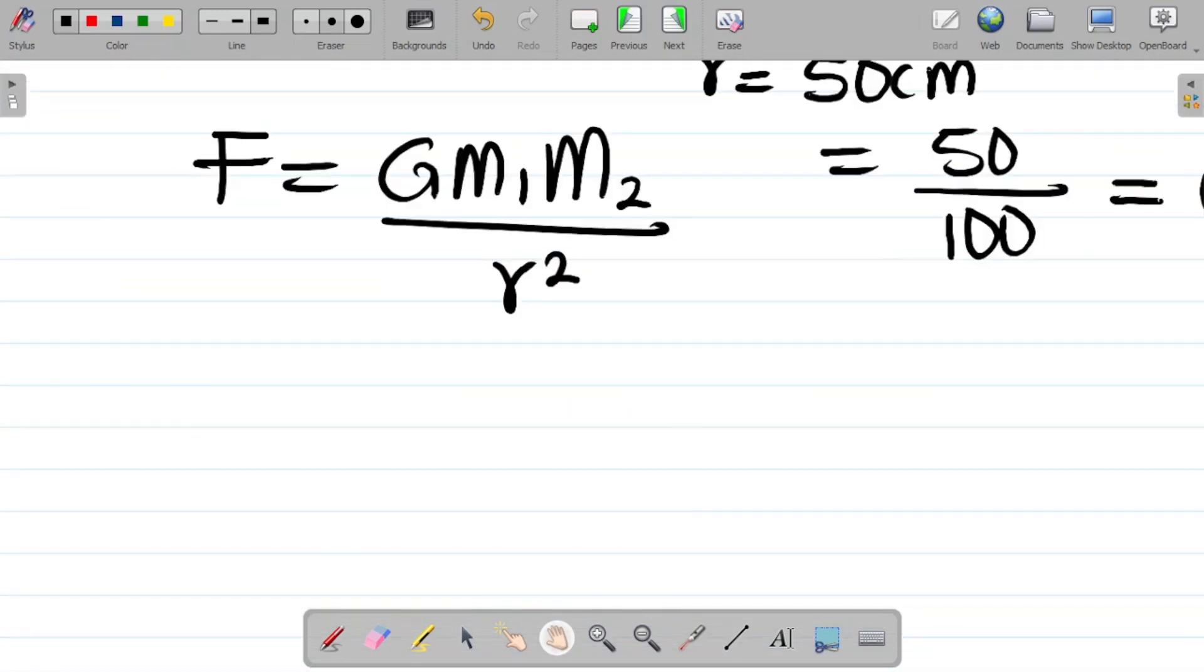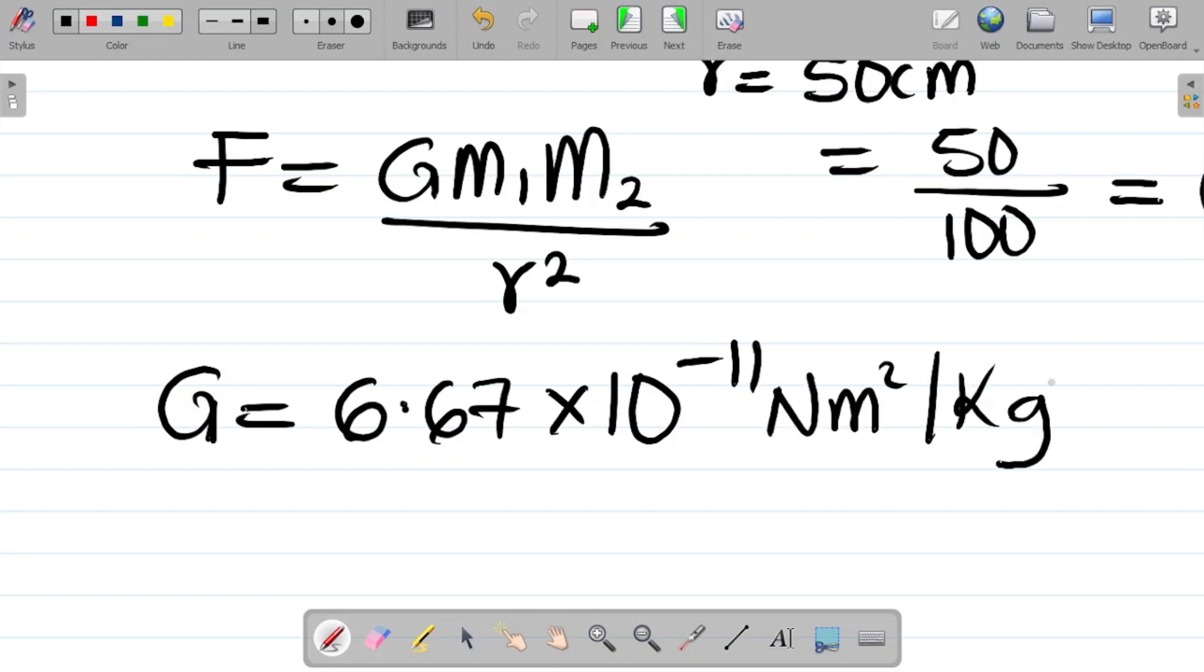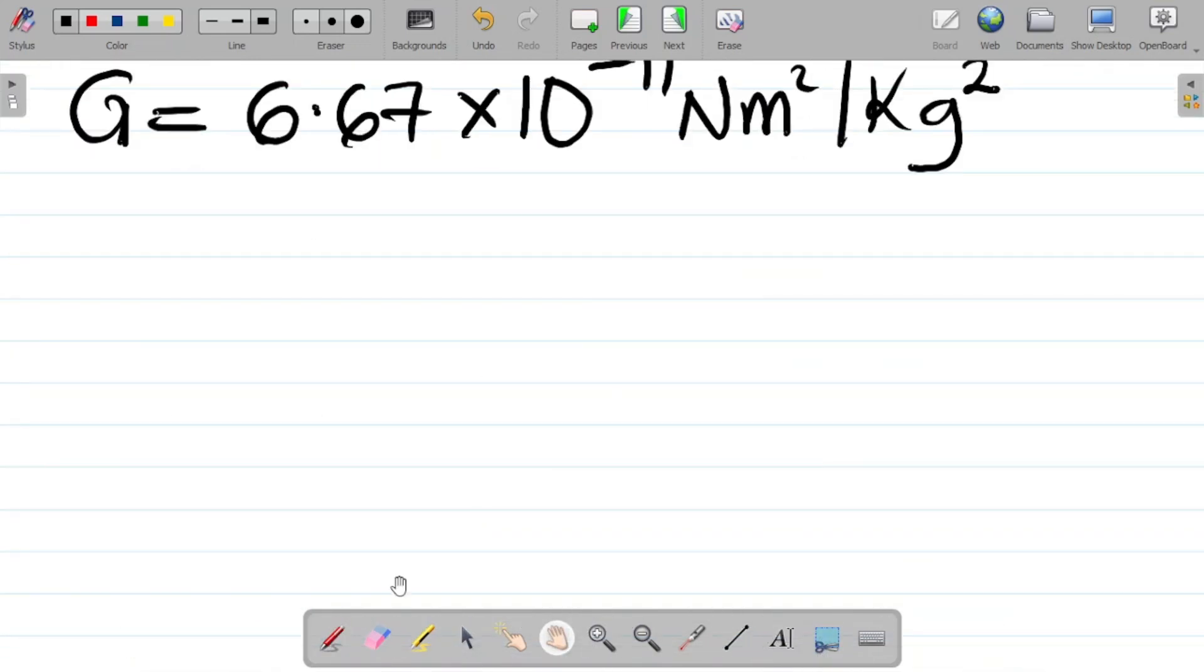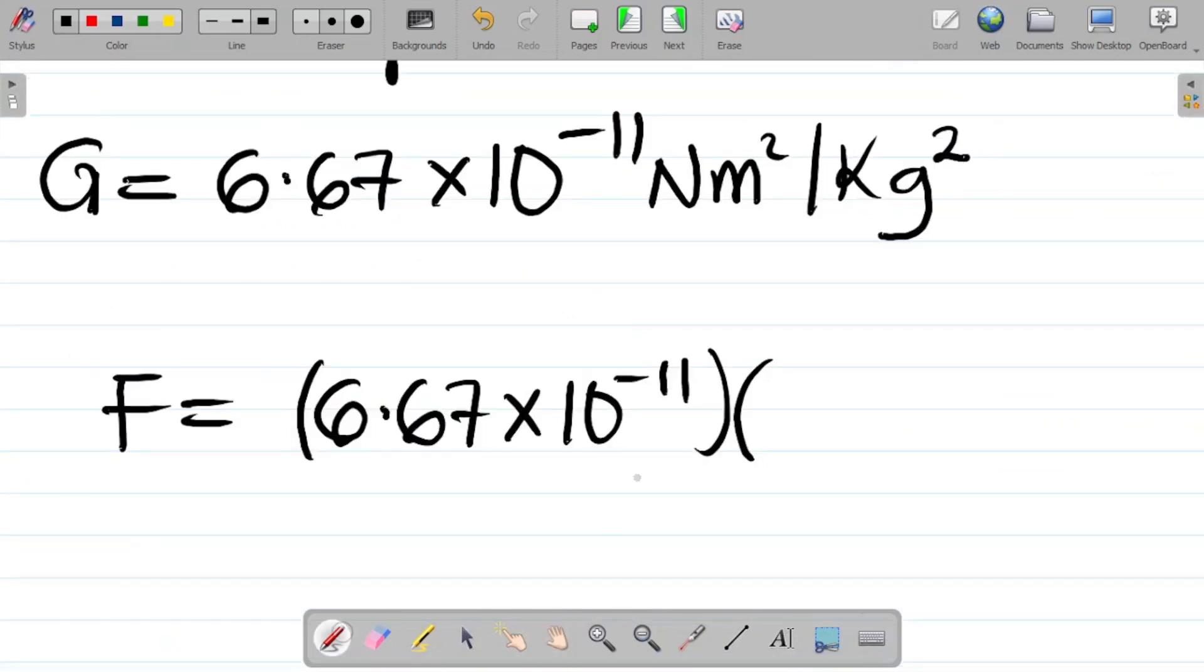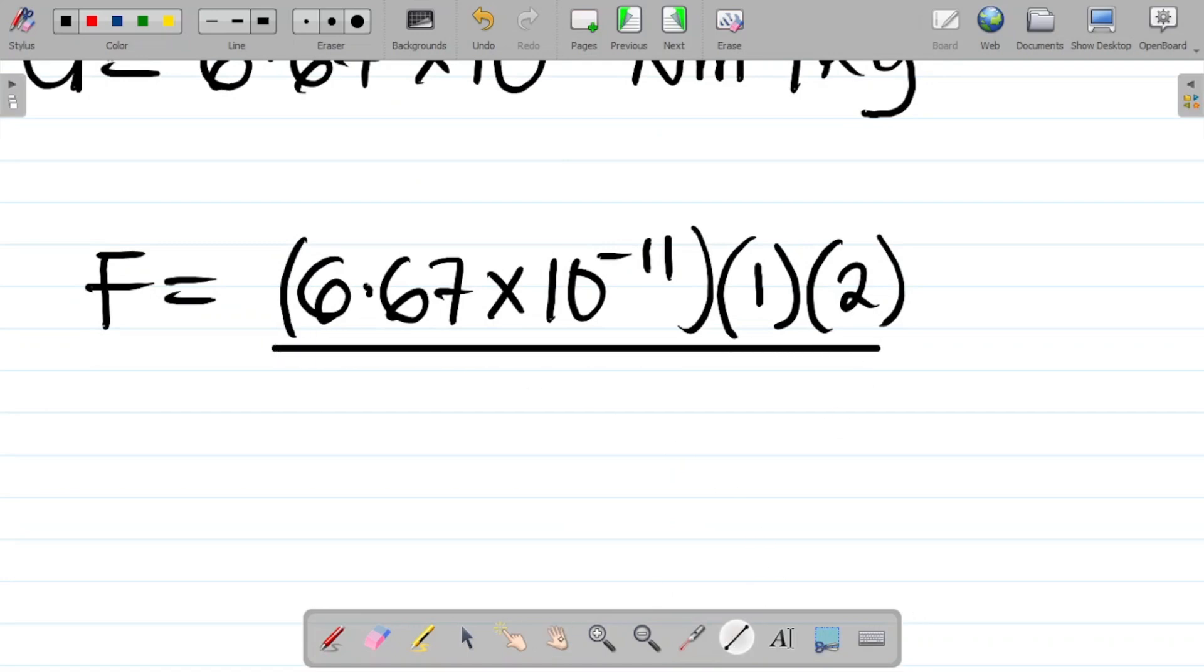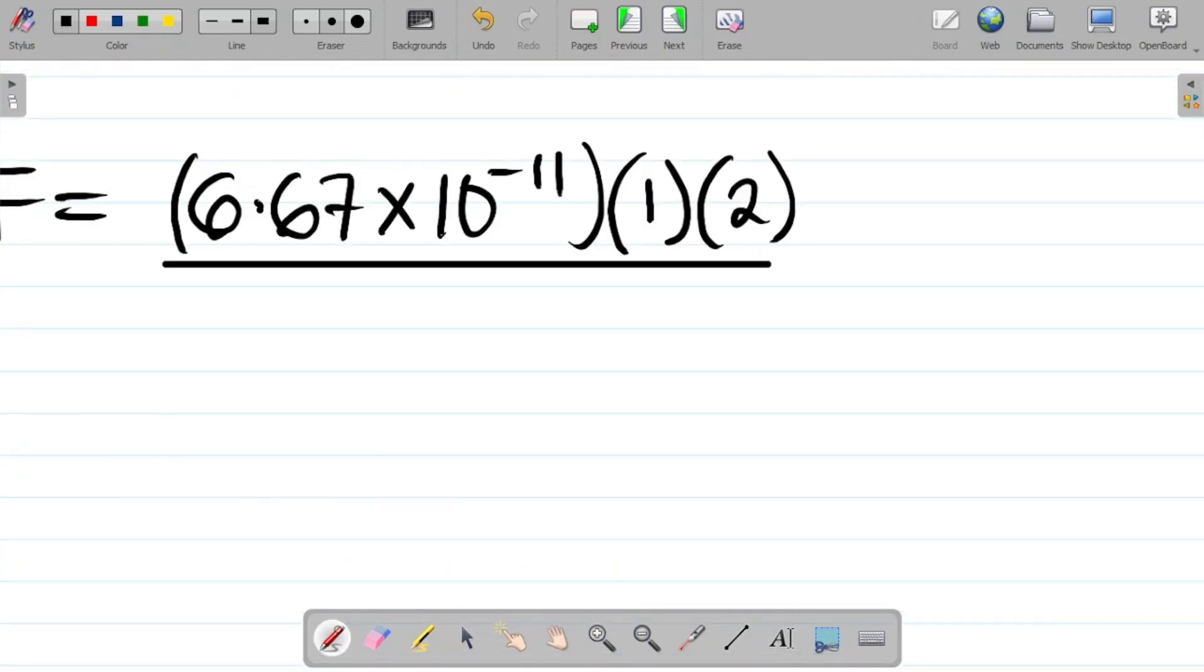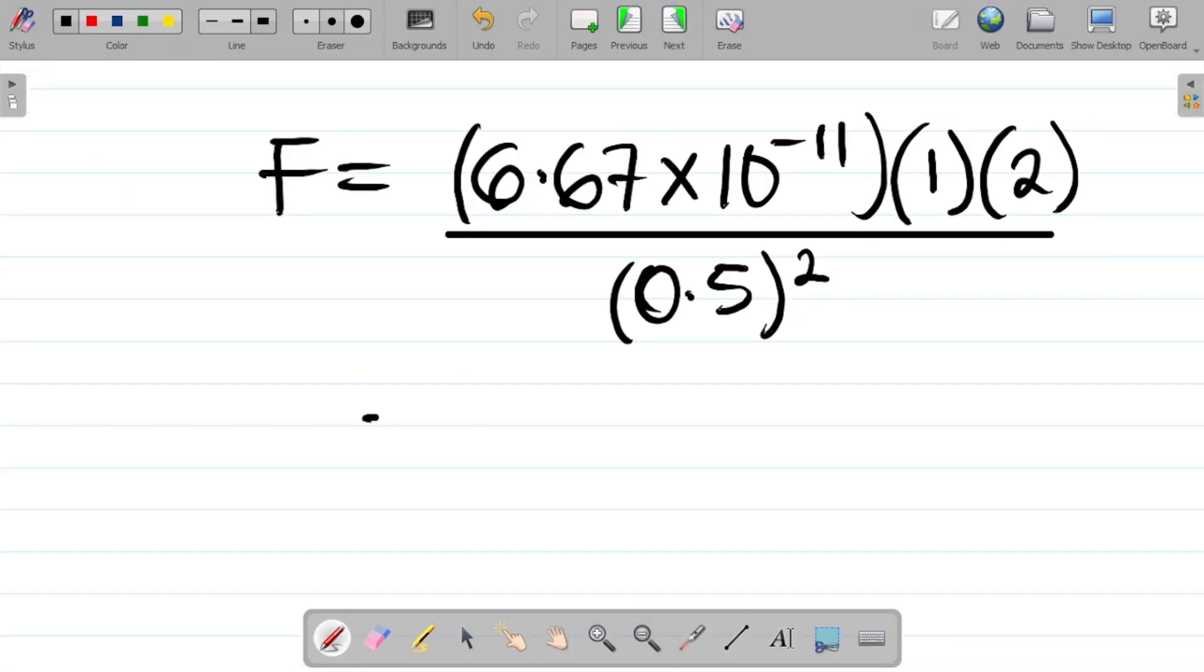So the force between them would therefore be F. Of course, G is also a constant. The value of G is 6.67 times 10 to the power minus 11 Newton meters squared per kilogram squared. Let's input these values and see what we get. F is equal to G, 6.67 times 10 to the power minus 11, into M1 and then M2. From what we have here, M1 is about 1 kilogram, M2 is 2 kilogram. So it becomes this into 1 kilogram and 2 kilogram, all over R squared. We're going to use the meter value, which is 0.5, so this all over 0.5 squared.